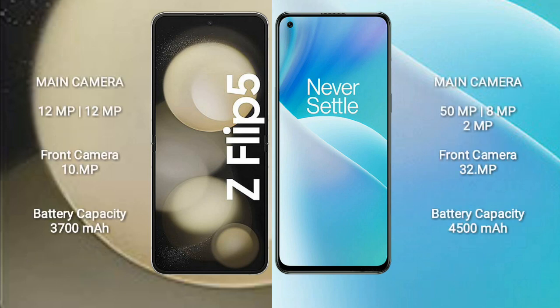The Samsung Galaxy Z Flip 5 comes with a dual camera setup: 12MP plus 12MP, and a 10MP front camera. The OnePlus Nord 2T comes with a triple camera setup: 50MP plus 8MP plus 2MP, and a 32MP front camera.